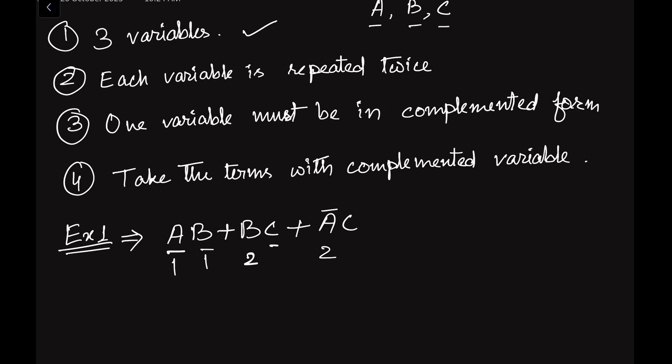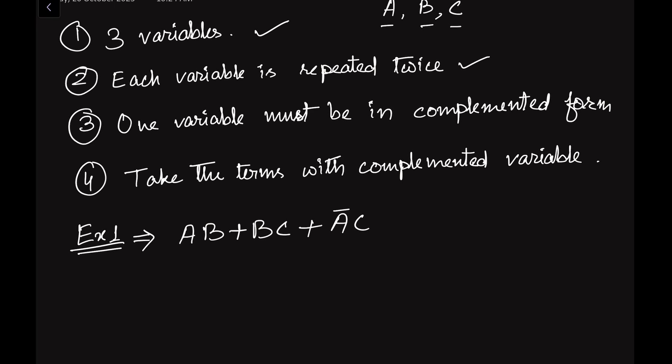C is present in the second term and also in the third term, so each variable is present twice — second condition fulfilled. For the third condition, one variable must be in complemented form. Looking at the expression, A is present in normal form and also in complemented form. So all three conditions are satisfied.